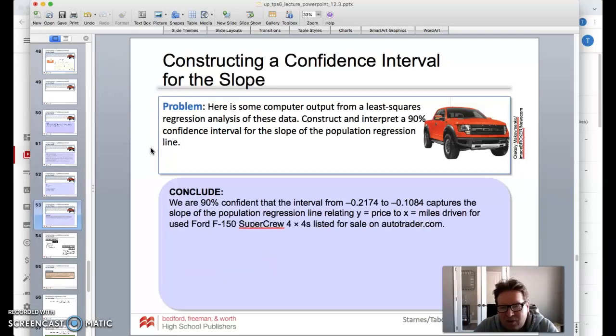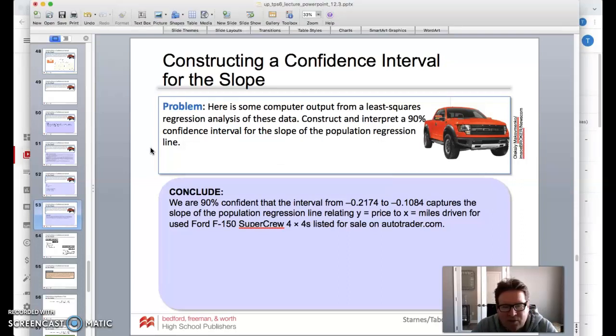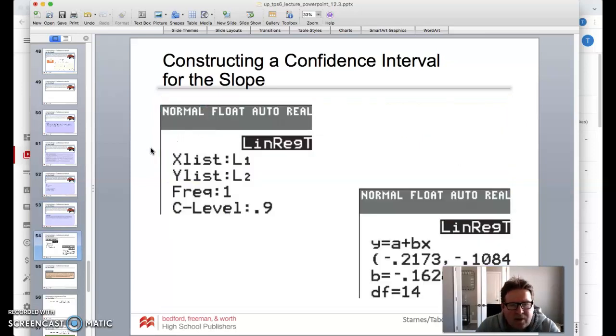Let's get to the conclusion. We're 90% confident that that interval captures the slope of the population regression line relating Y, which is the price, to X equals the miles driven for the used F-150s listed on AutoTrader. Using tech video on the tech corner number 31, I'll show you this. You got to do that linear regression T. It'll make you put in list one, list two, use your confidence level.